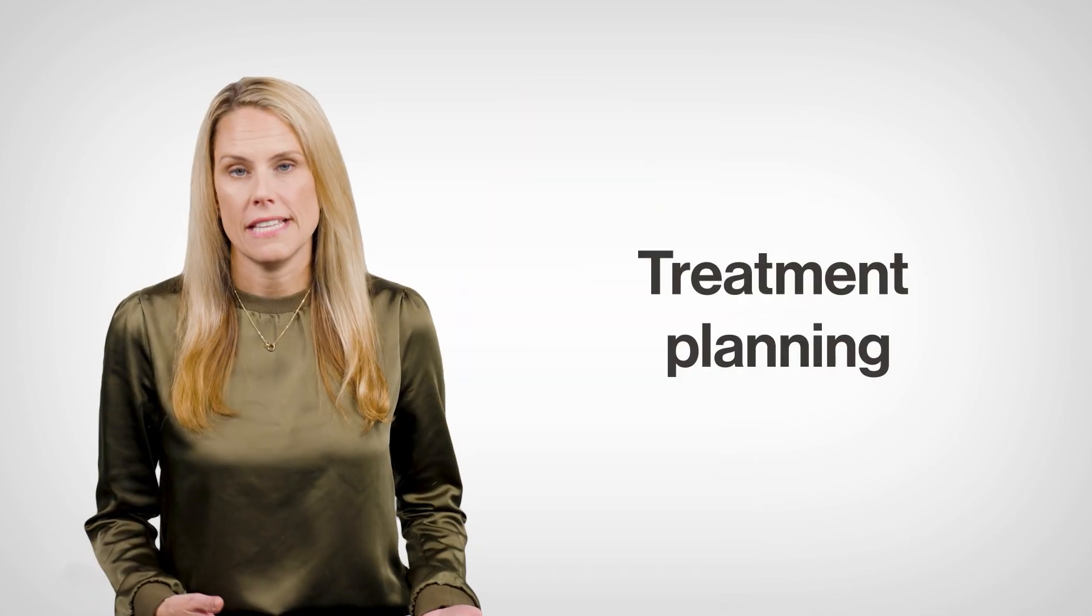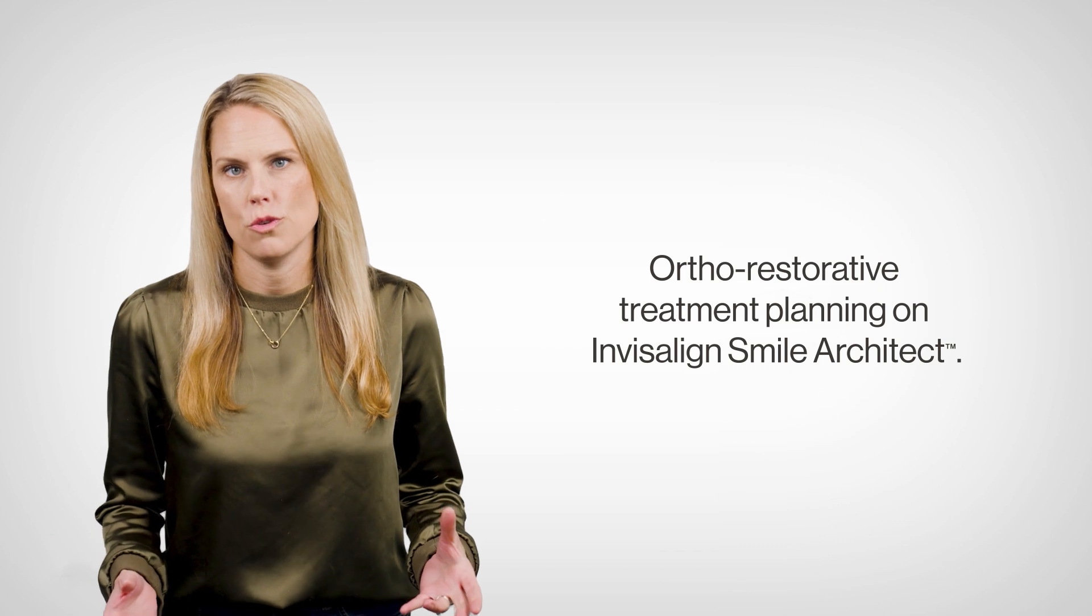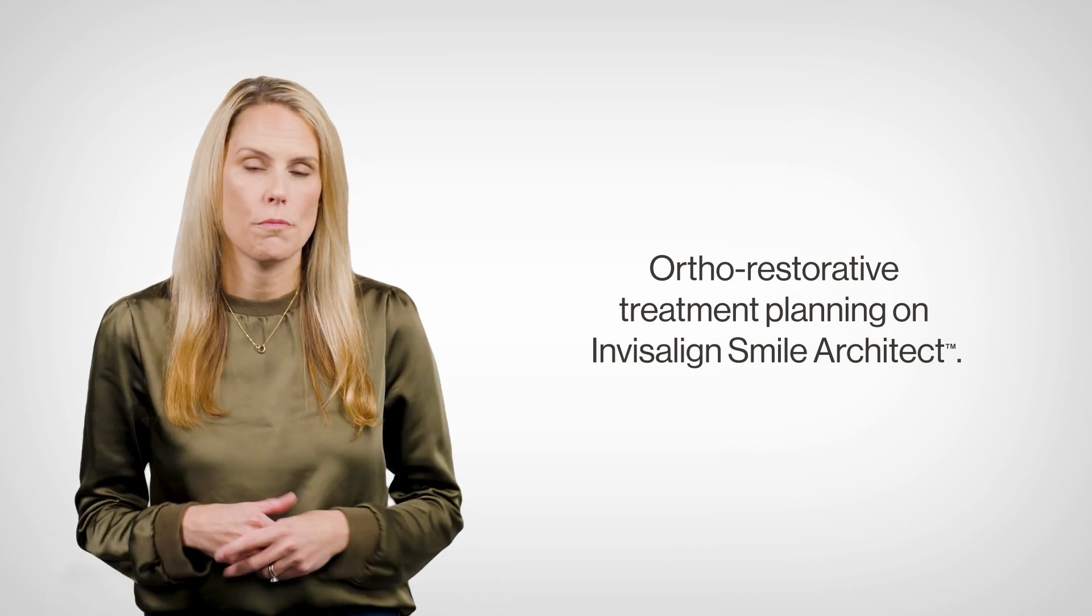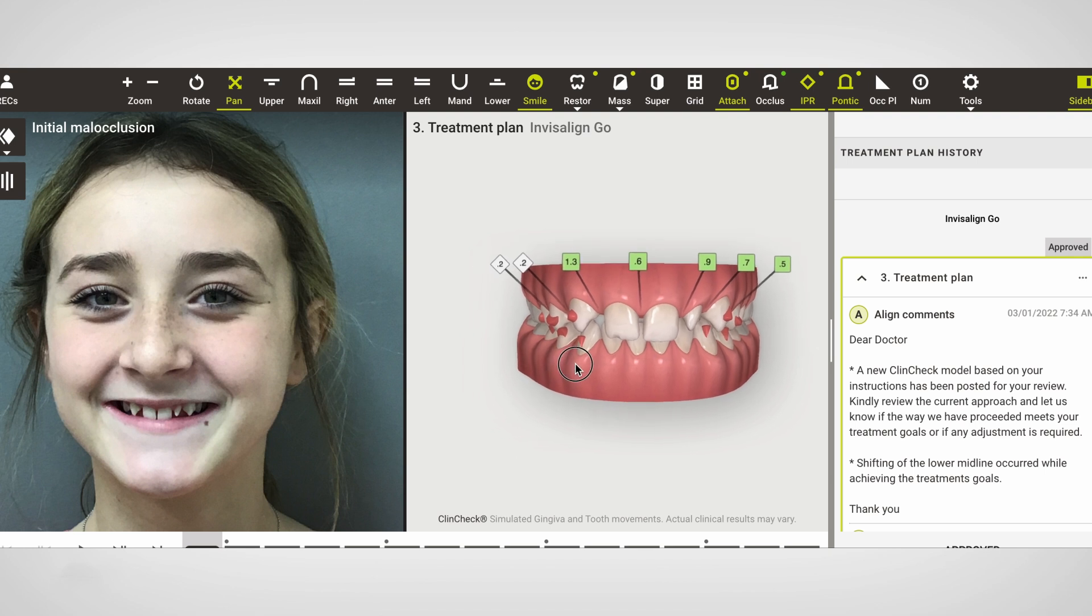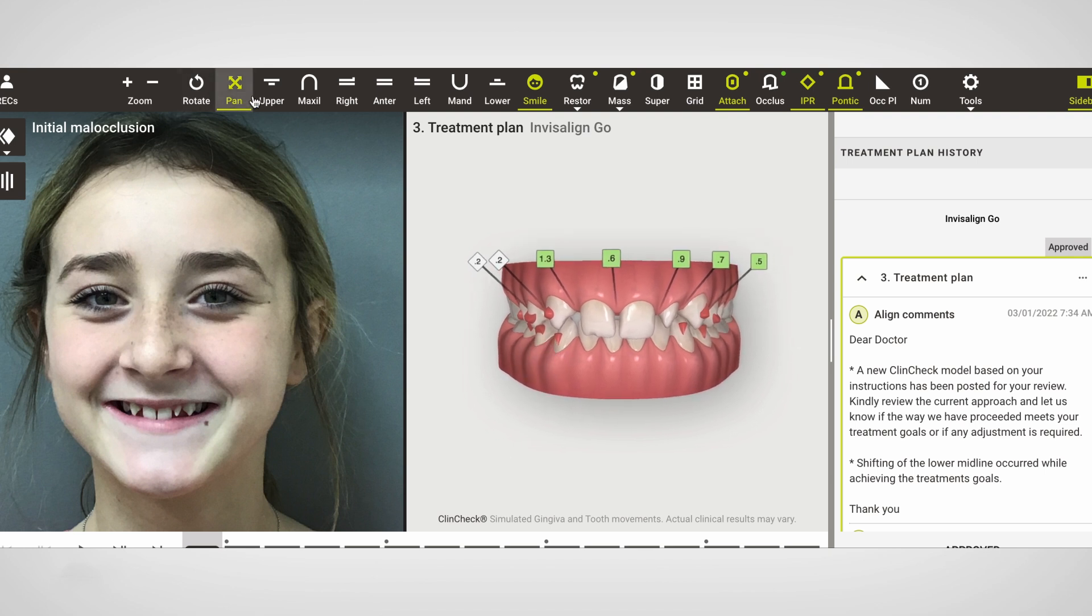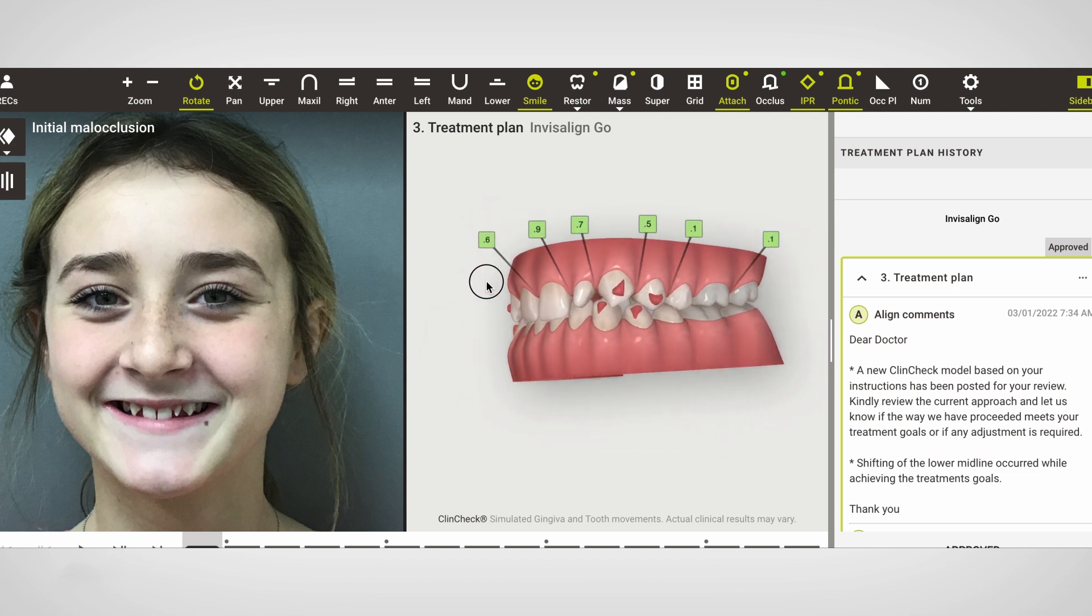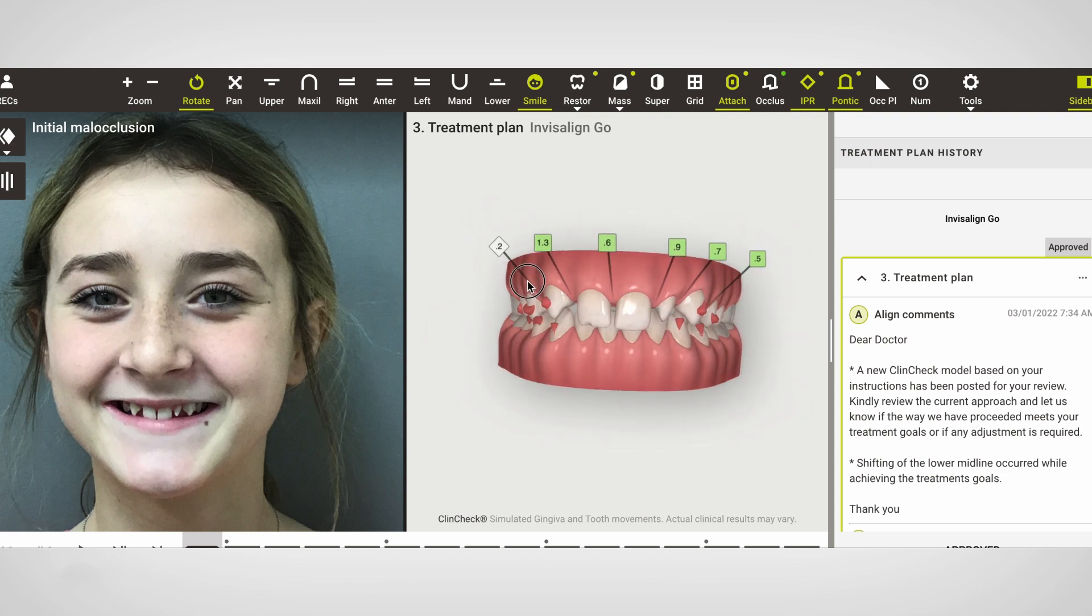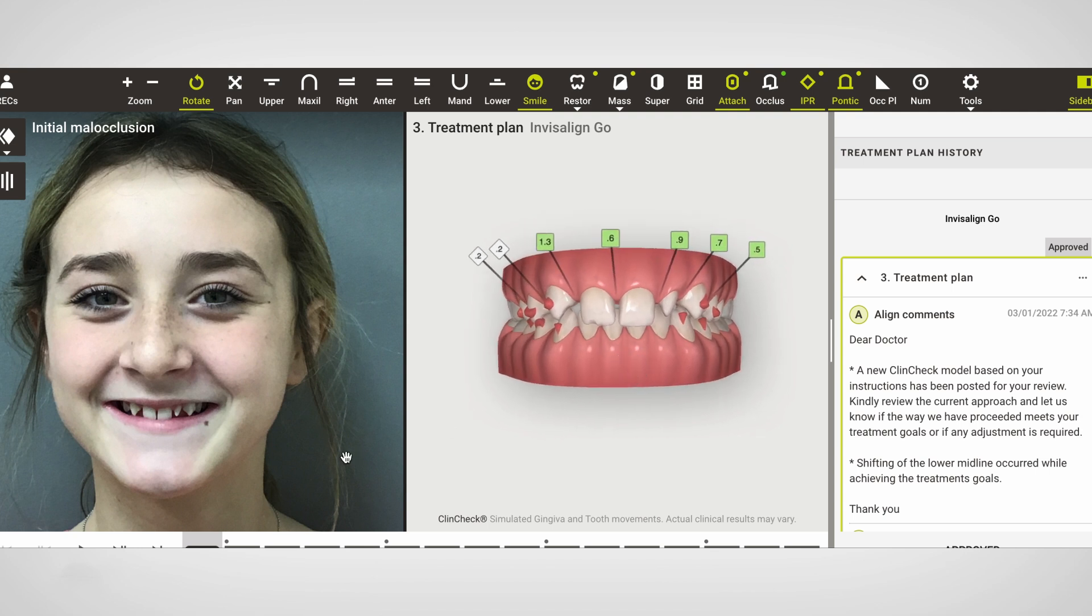So then moving the case into Smile Architect allowed us to plan ideally those spaces so they're symmetrical with both laterals. We also had some issues with the centrals as well and the contour and the incisal edges were not even. So we pre-planned four restorations for this particular patient. Now the interesting thing is once we moved her to final phase, we actually decreased the number of restorations that were required because ideal tooth position solved some of those concerns.